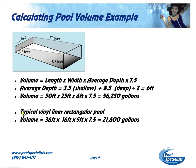A typical standard average vinyl liner rectangular pool is going to be, say, 36 feet long, 16 feet wide. If it's three and a half feet deep in the shallow and eight feet in the deep end, we can round that out to five feet, multiply times our constant of 7.5, and we have 21,600 gallons. So for all intents and purposes, we call this a 20,000-gallon pool.